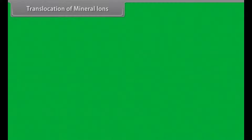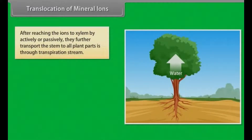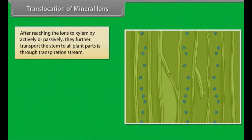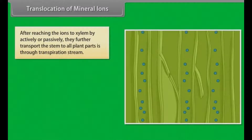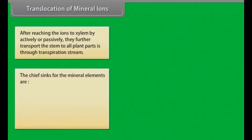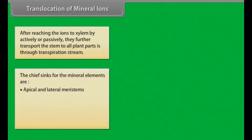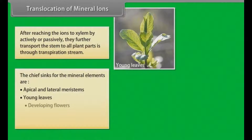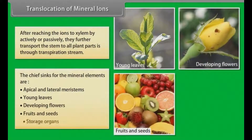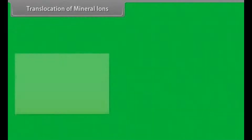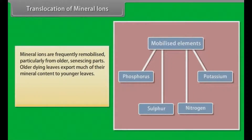Translocation of mineral ions. After the ions have reached the xylem through active or passive uptake, or a combination of the two, their further transport up the stem to all parts of the plant is through the transpiration stream. The chief sinks for the mineral elements are the growing regions of the plant, such as the apical and lateral meristems, young leaves, developing flowers, fruits and seeds, and the storage organs. Mineral ions are frequently remobilized, particularly from older, senescing parts.